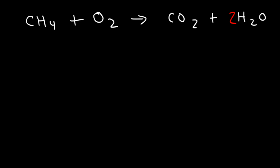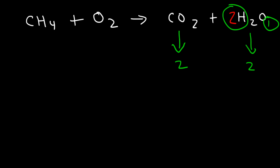Finally, balance the number of oxygen atoms. On the right side we have two oxygen atoms in carbon dioxide and two oxygen atoms in the two water molecules. Two times one is two, so we have a total of four oxygen atoms. Therefore we need to put a 2 in front of O₂ to balance it.